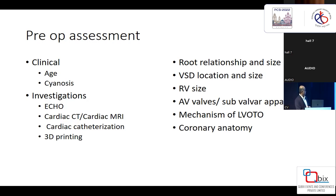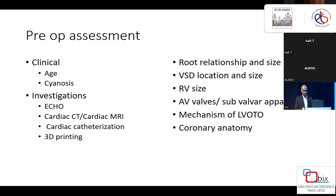With this background, what do we need to assess preoperatively? We need to see the root relationship — the ratio between pulmonary valve and aortic valve is very important when considering root transfers. VSD location and size are important. Right ventricular size and volume are important. AV valve subvalvar apparatus — where chords insert and whether they are in the way of VSD closure and tunneling — is critical. The mechanism of LVOTO, and a complexity-based scoring system from the Canadian group, gives a rough idea of whether the LVOTO is simple or complex.